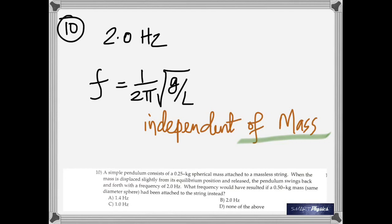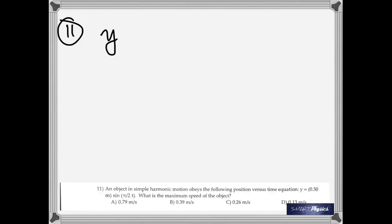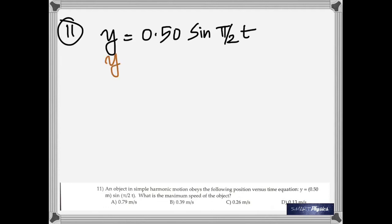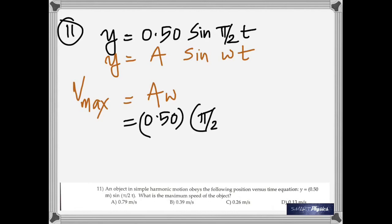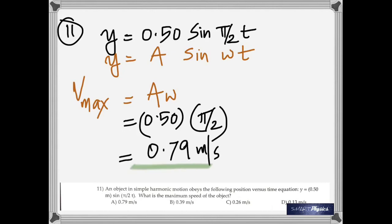Question 11: an object in simple harmonic motion obeys the equation y equals 0.50 sine (pi over 2 times t). What's the maximum speed? Maximum speed is a times omega. Comparing to the equation, a equals 0.5 and omega equals pi over 2. Multiplying: v-max equals a times omega, giving 0.79 meters per second.